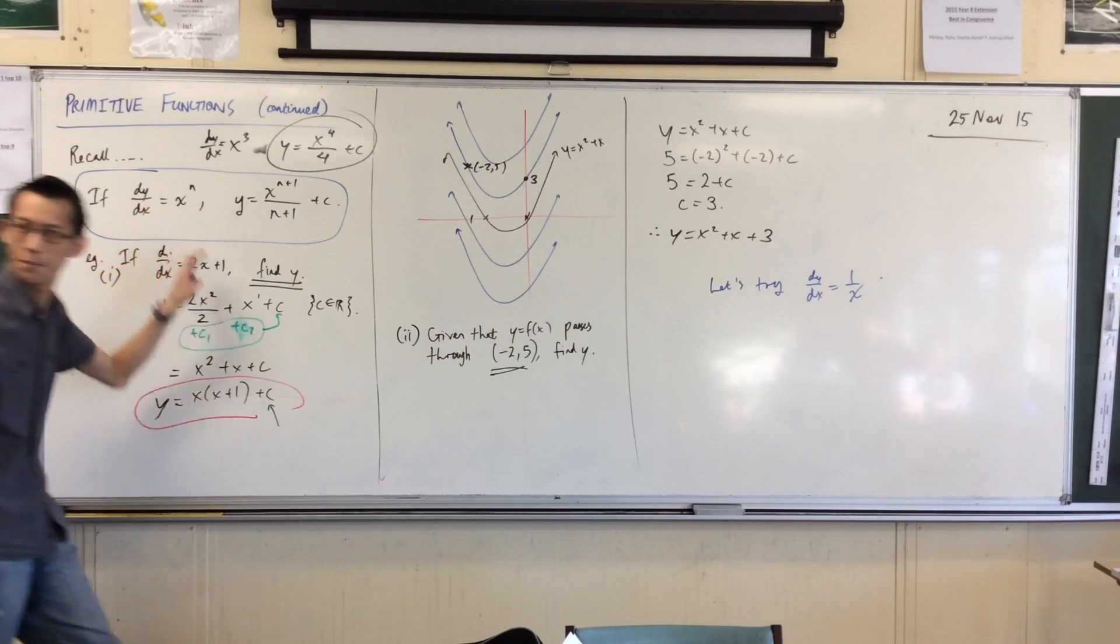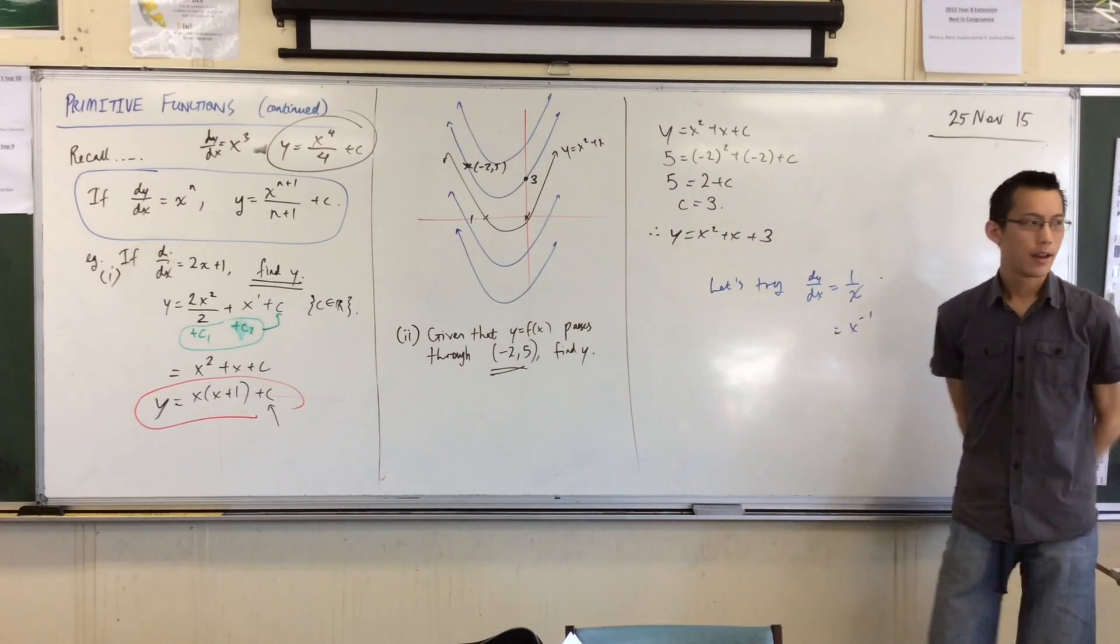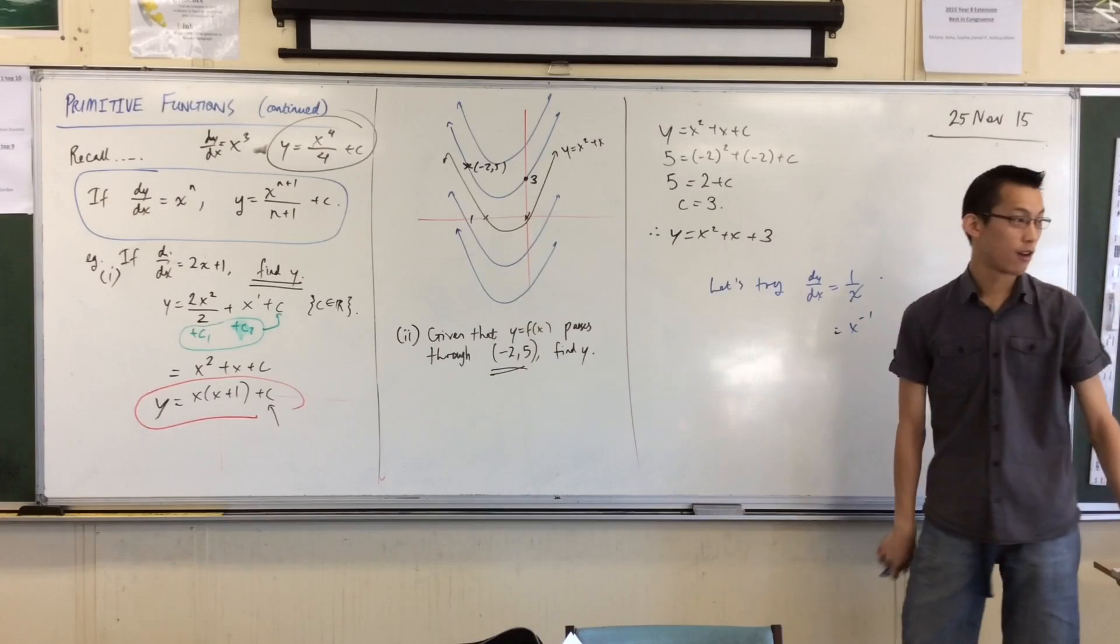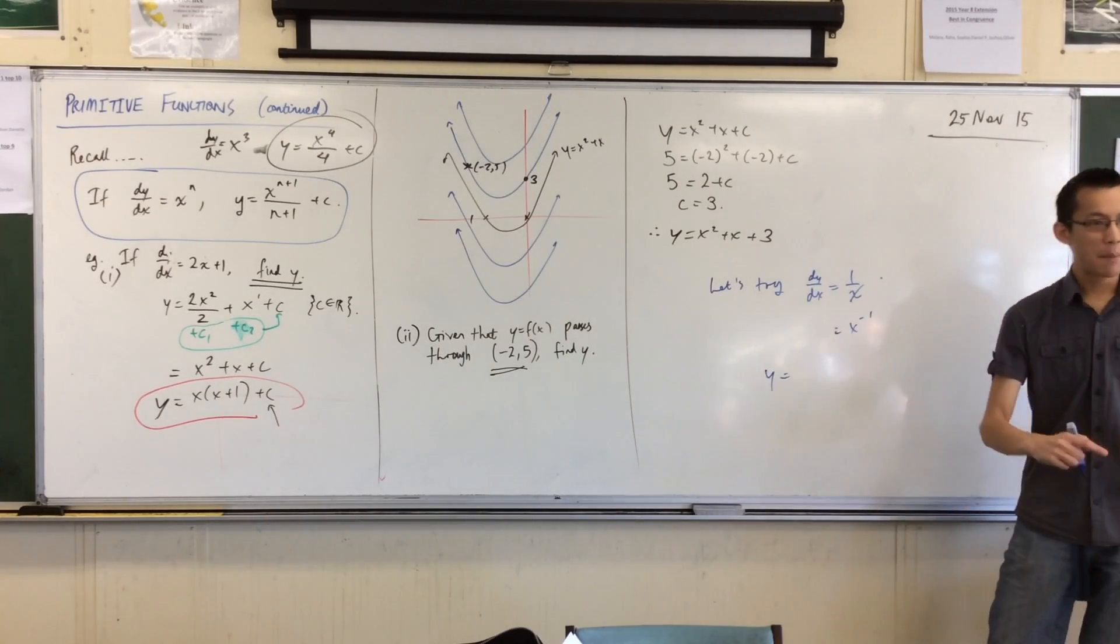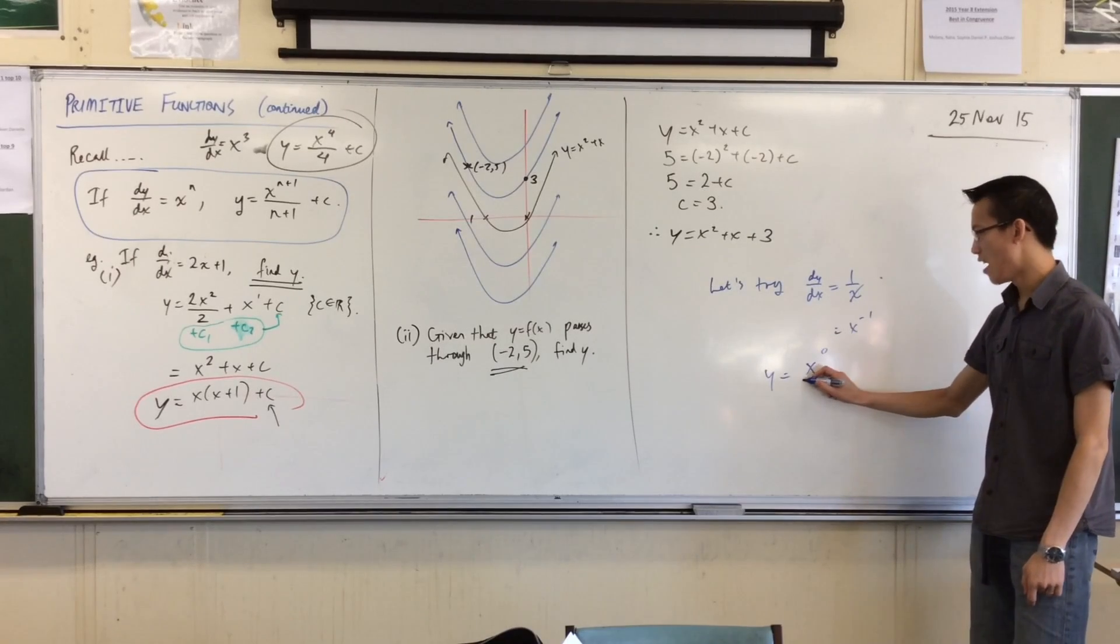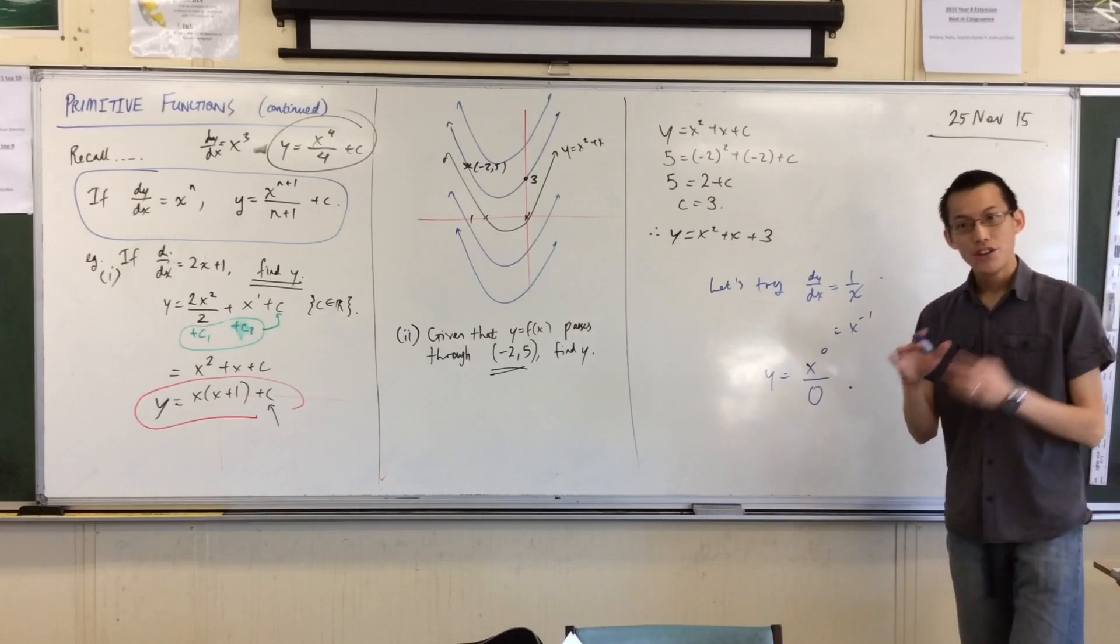How would I write that in index form? This is x to the power of negative 1. Now, if I think that's okay, it's an x to the power of n, so I'll just do the thing I did before. I'll block the power up, and then I'll divide by... uh-oh.